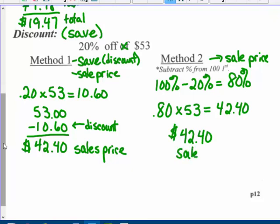Either way, I'm going to get the same answer. Method one: find the discount and subtract it to get the sale price. Method two: subtract the percent from 100% first to get the sale price. I could also take $53 minus $42.40 to get $10.60 if I wanted to know how much I saved.